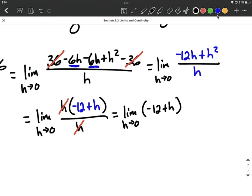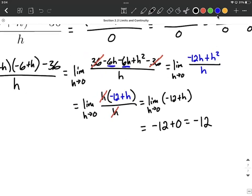And from here, we don't have any h's in the denominator that we're worried about replacing and getting and dividing by 0. So to finish this up, we're going to replace the remaining h with a 0. And overall, our limit is going to equal negative 12.